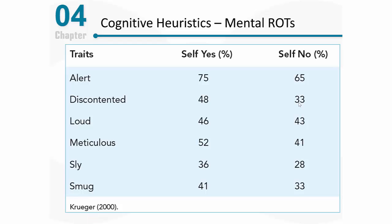Where does that come from? To some extent, it's a byproduct of the availability heuristic. We tend to associate ourselves with other people who are like us — like us in a variety of ways. And if they're like us, our experience shows that most people have those same types of traits and attitudes as we have. So when I need to make sense of other people, that is what is top of mind.